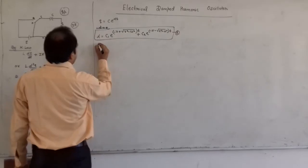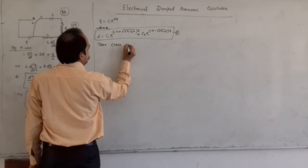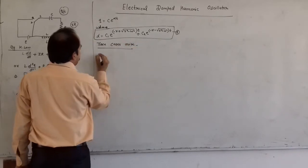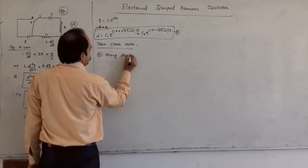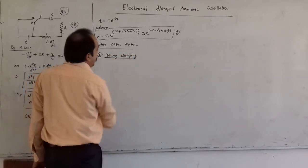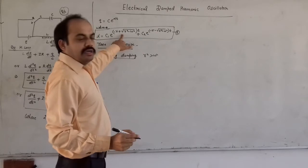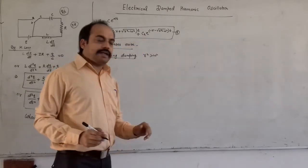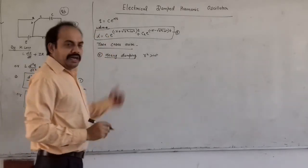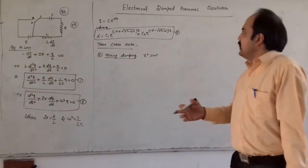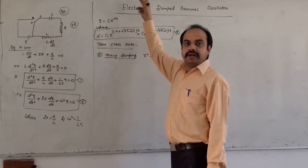Three cases arise. The first case is heavy damping, where β² > ω². In this case both terms under the root are such that α is negative, meaning Q will decrease continuously — Q will decrease exponentially with time.